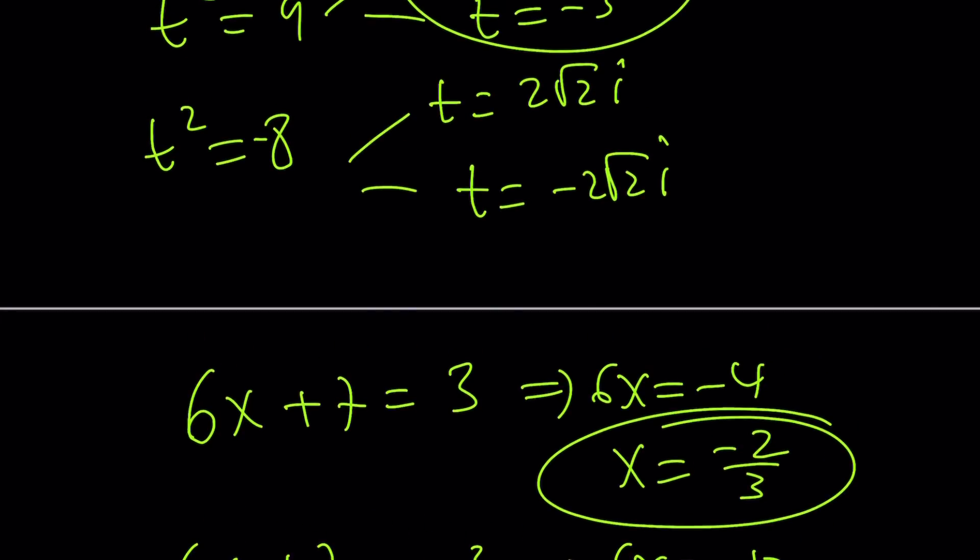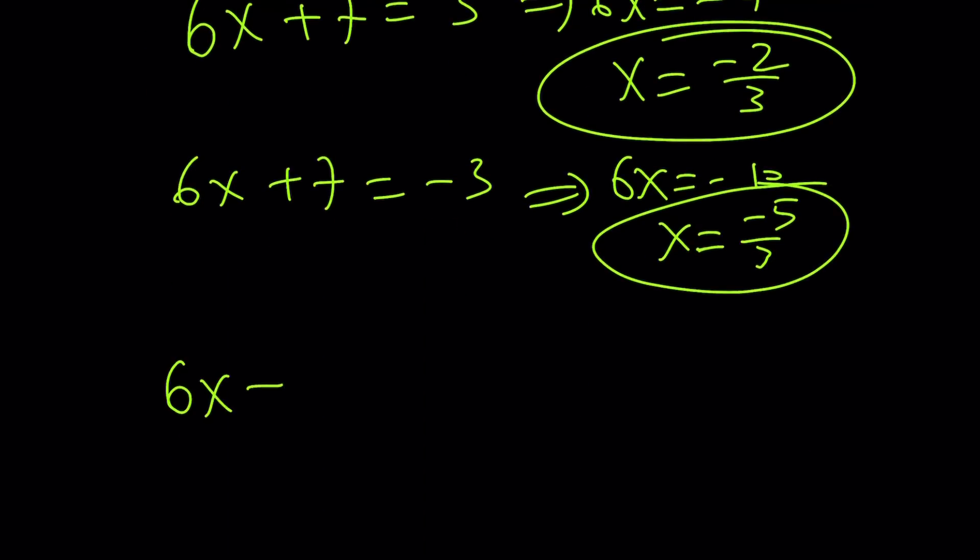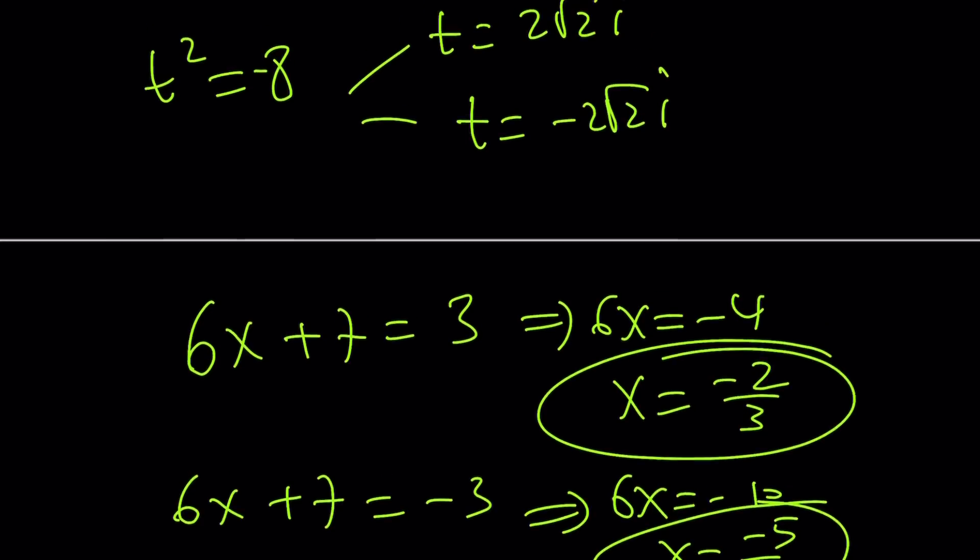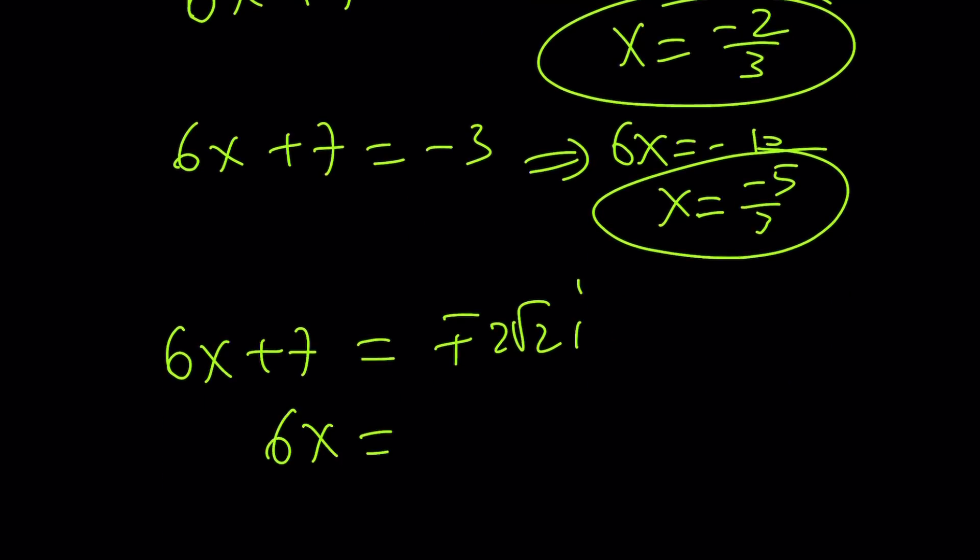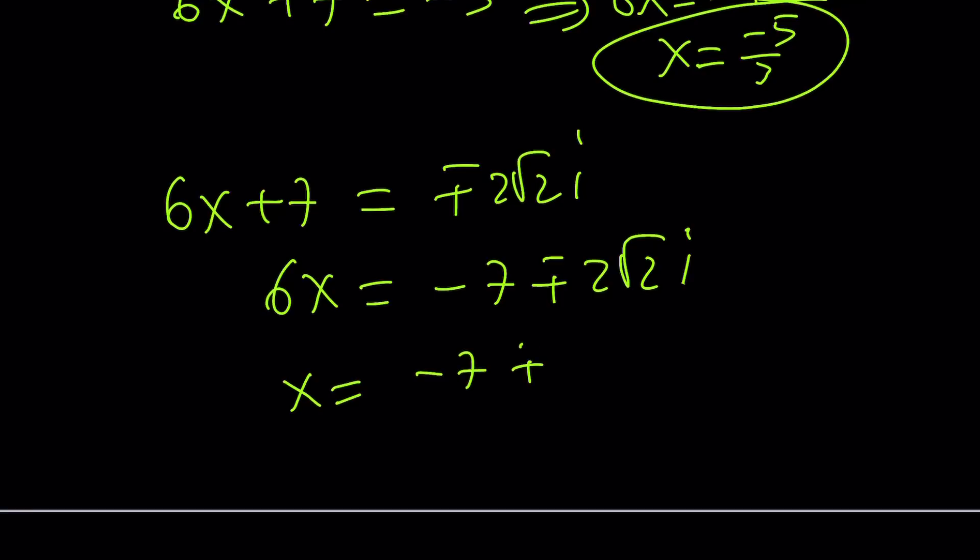If you go with plus minus 2 root 2i, let's see what happens. Plus minus 2 root 2i. We're going to subtract 7 from both sides. That's going to add negative 7, in other words. And then we're going to get our complex solutions from here with a conjugate pair. And that's going to be the complex solutions. Make sense? Okay, great. So that's pretty much what we get from here. And those are all the solutions. And this brings us to the end of this video.